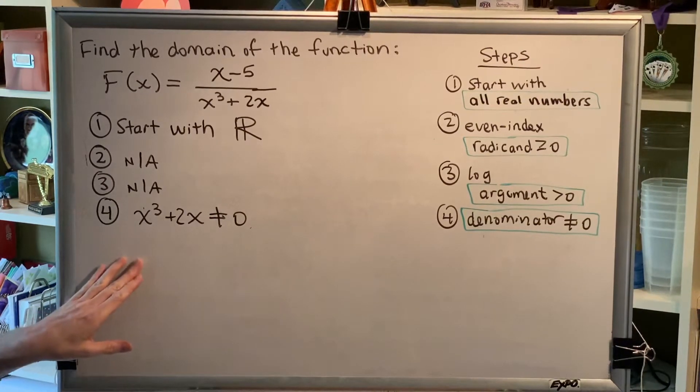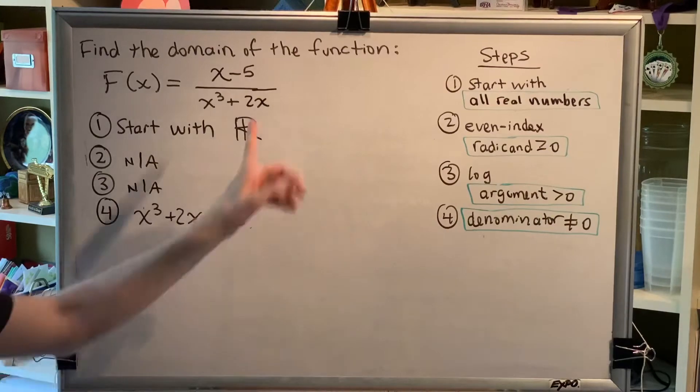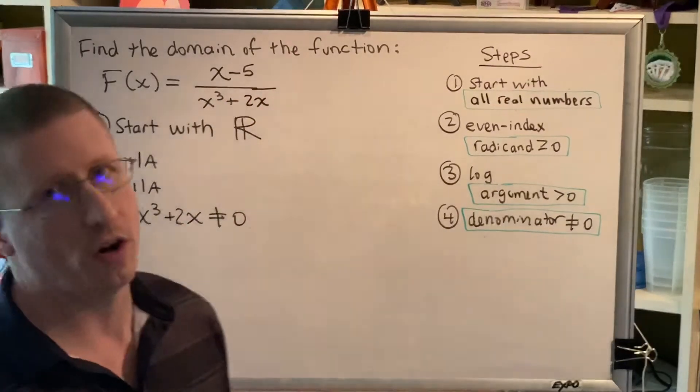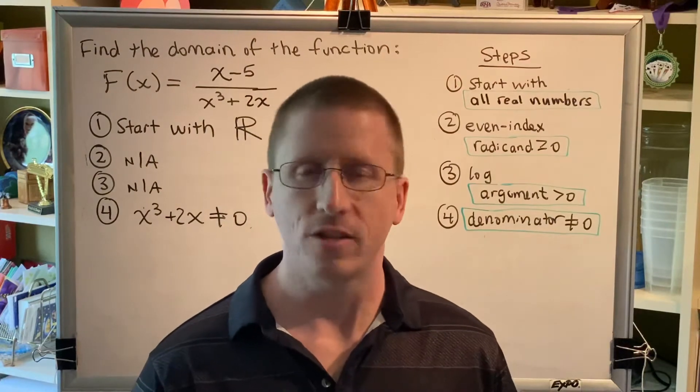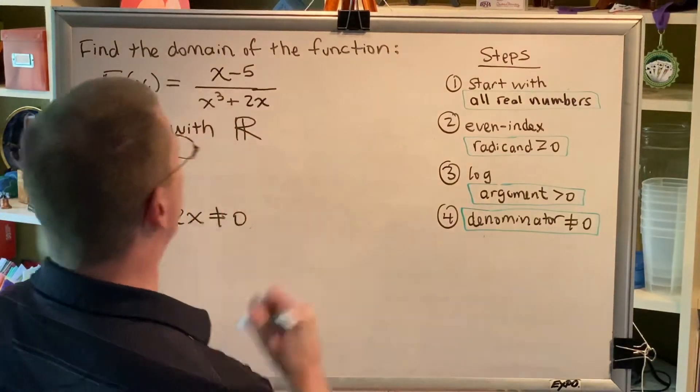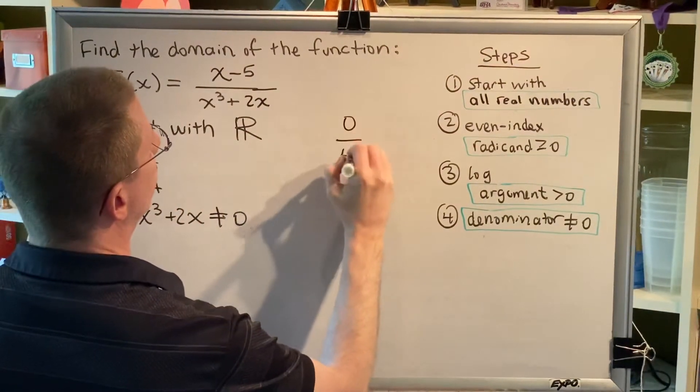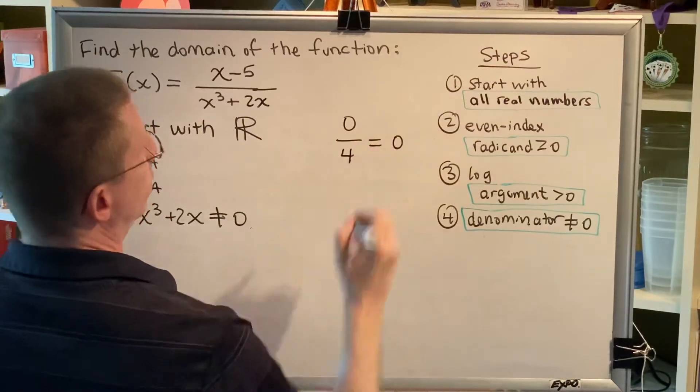Now, the most common mistake that students make when they get to this step is that they also indicate the numerator is not allowed to be 0. But that's not true. Numerators can be 0, that's no problem. If a numerator is 0, like this, that just gives the result 0.